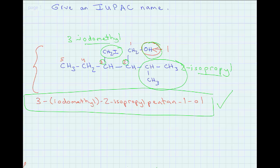On carbon three we have CH₂I, which is the iodomethyl group. Iodomethyl comes before isopropyl alphabetically, so the full IUPAC name is 3-(iodomethyl)-2-isopropylpentan-1-ol.